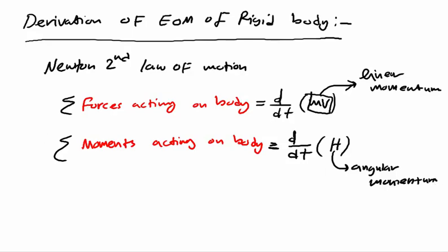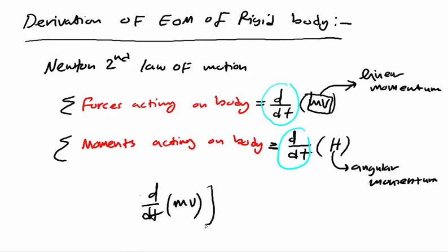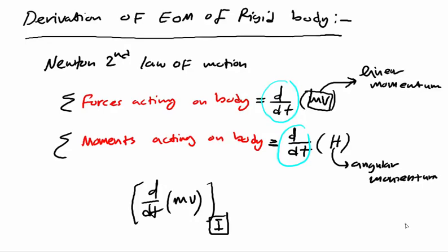These two time derivatives are referred to the inertial axis. So sometimes we write d/dt with a notation indicating it is with respect to the inertial axis. We are talking about a rigid body in space and three dimensions, so there are three components of force and three components of moments.